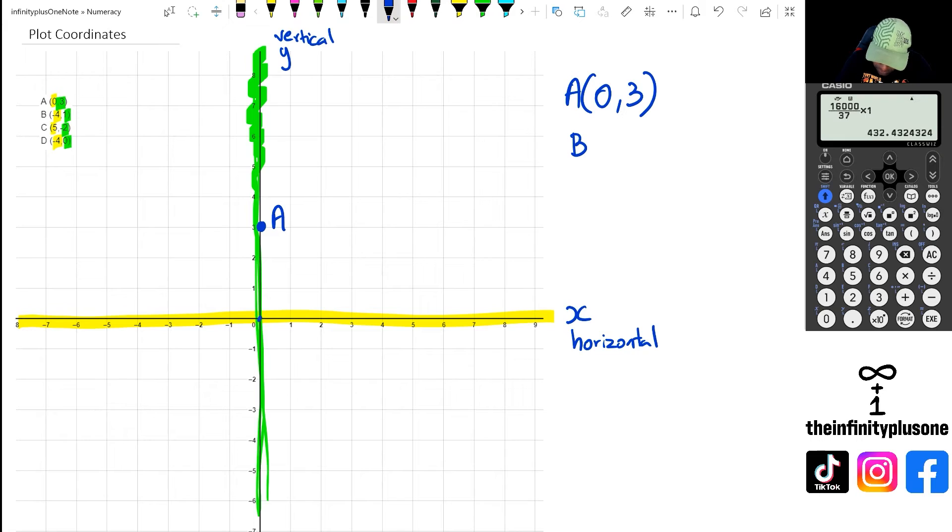Now let's have a look at point B. Point B is negative 4 and 1. So that means we are going to go along the x-axis negative 4, and then along the y-axis we're going to go positive 1. So negative 4, starting from 0, 0, which is the center, and I want to go to negative 4, which is 1, 2, 3, 4, there it is.